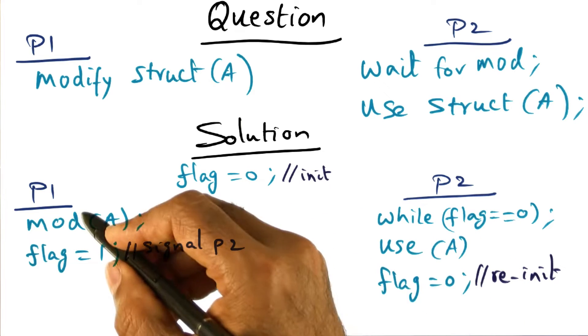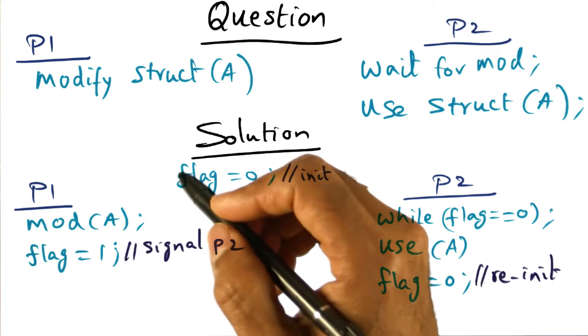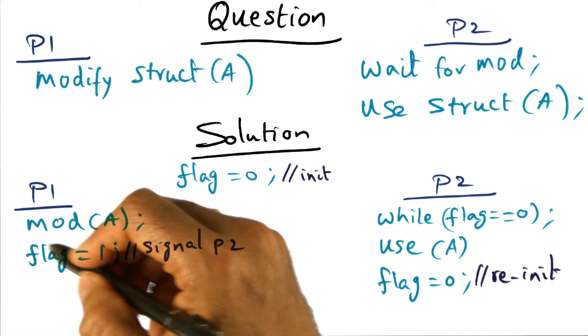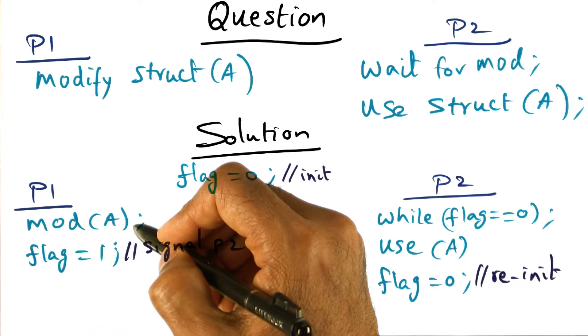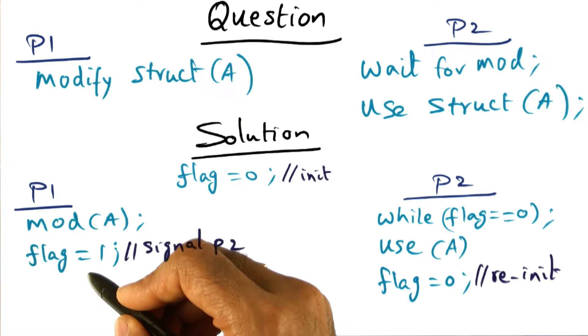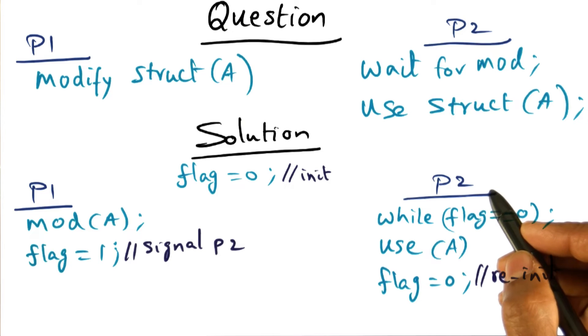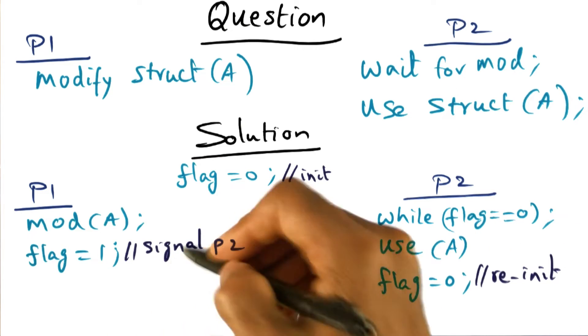And the agreement between these two producers and consumer is that the producer will modify the data structure that he wants to modify. And once he's done with the modification, he will set this flag to be a 1. And that's the signal to P2 that this guy is done with the modification.